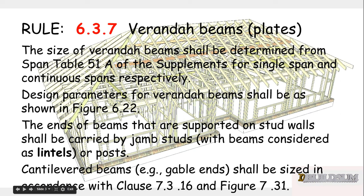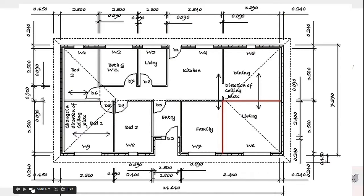I want to highlight this paragraph here: ends of beams that are supported on stud walls shall be treated as lintels. Looking at our plan, our eave beam is going to continue across between this wall junction here and this wall junction here, giving us somewhere to run our rafters or trusses. So technically it's going to be supported at both ends, and therefore we can treat it as a lintel.